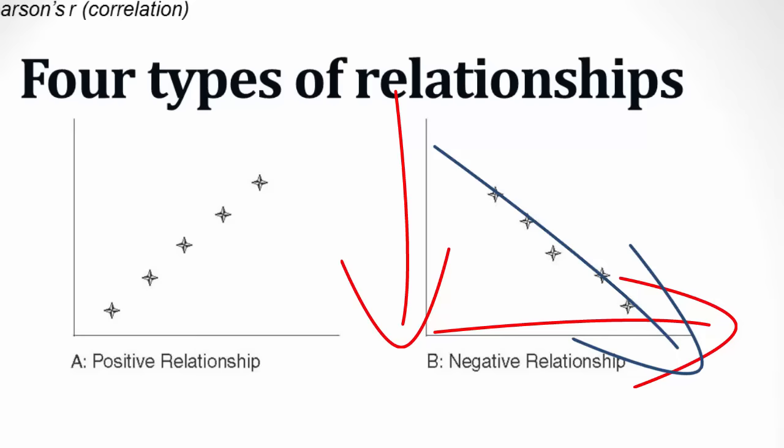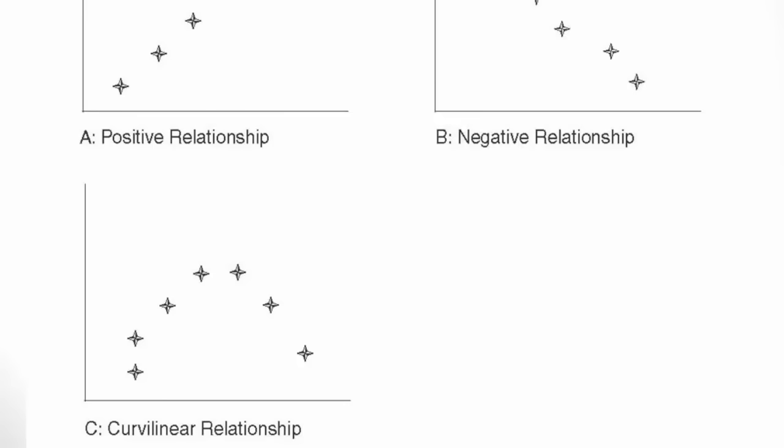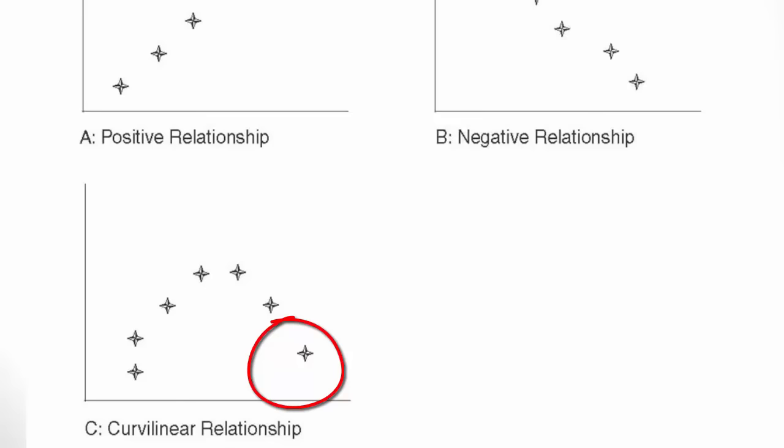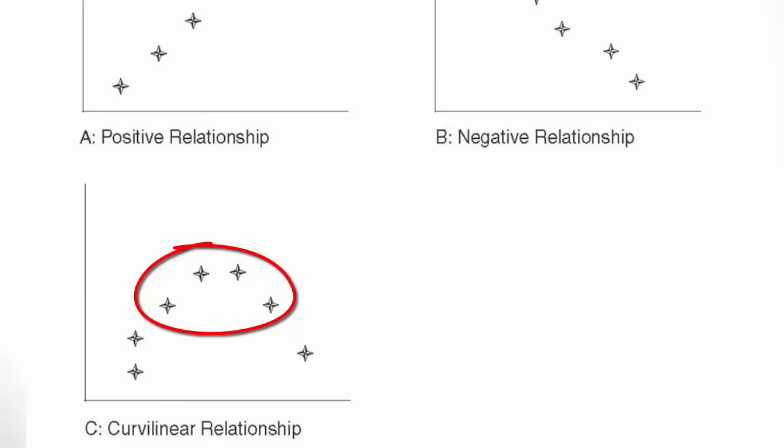A curvilinear relationship might also exist. For this example, let's change the variables to anxiety level and preparedness for a test. Those who are unprepared for a test may experience low anxiety levels — they know they won't do well, so why sweat it? And those who are really prepared may also experience low anxiety levels; they have it down cold. But it's those in the middle who might experience higher levels of anxiety.